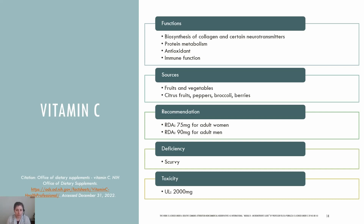Individuals who smoke require 35 mg per day more vitamin C than non-smokers. Vitamin C deficiency is rare in the US. There is an associated deficiency condition called scurvy, in which signs can appear within one month of little to no vitamin C, less than 10 mg a day. Initial symptoms can include fatigue and inflammation of the gums and progress to petechia, poor wound healing, hyperkeratosis, depression, bleeding gums, and loss of teeth. While toxicity for vitamin C is fairly low and not associated with serious adverse effects, there is a UL set at 2,000 mg. Side effects can include diarrhea, nausea, and abdominal cramps.